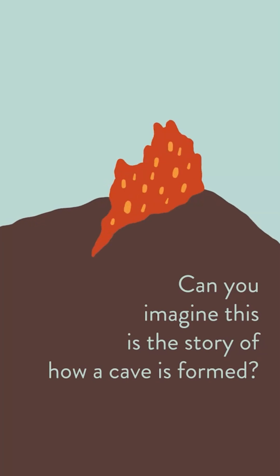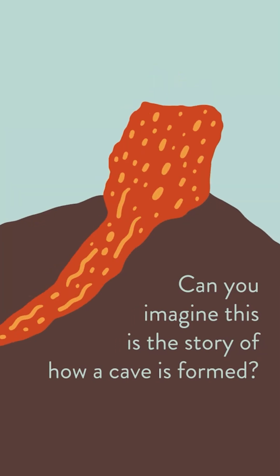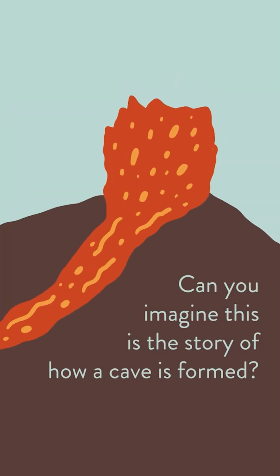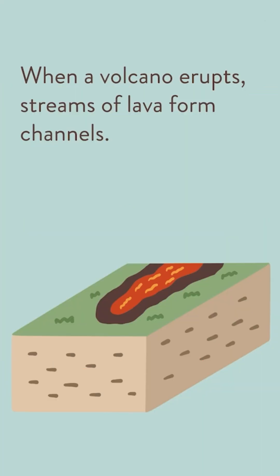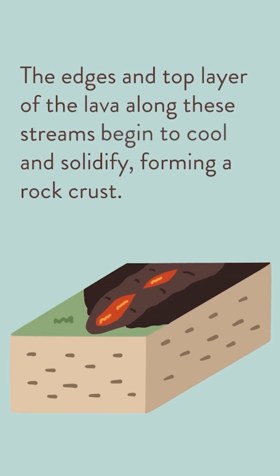Can you imagine? This is the story of how a cave is formed. When a volcano erupts, streams of lava form channels. The edges and top layer of the lava along these streams begin to cool and solidify, forming a rock crust.